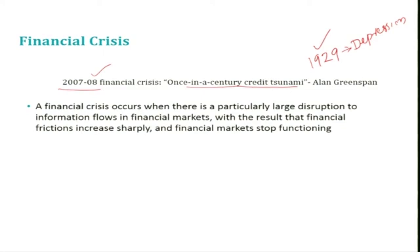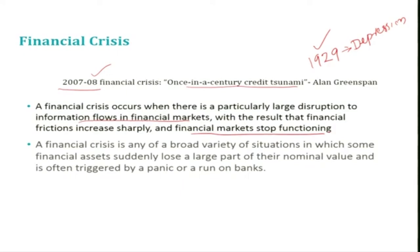A financial crisis occurs when there is a particularly large disruption to the information flows in financial markets, with the result that financial friction increases sharply and ultimately financial markets stop functioning. That is, a financial crisis is any of a broad variety of situations in which some financial assets suddenly lose a large part of their nominal value, and is often triggered by a panic or a run on banks.